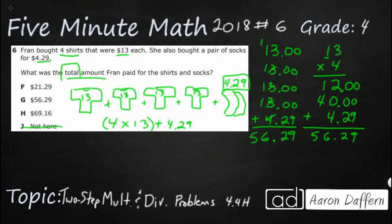That J option — 'not here' — is confusing, because if you got something wrong it's easy to think they must not have included your answer. But typically that's not going to be the correct choice. Your answer here is going to be G, $56.29.